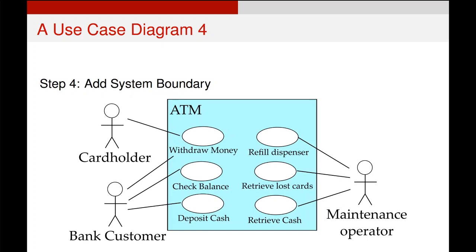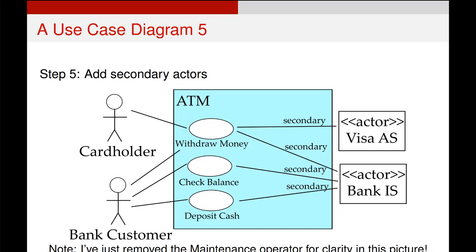Now we draw the bounds of our system — essentially saying which of these use cases are part of our system and which are not. Here, all the examples given are part of our system, but in many cases this is less trivial. Then finally, we add in our secondary actors. They usually appear on the right-hand side of the diagram, all relationships are marked with a secondary tag, and we connect them to all the use cases that require them.